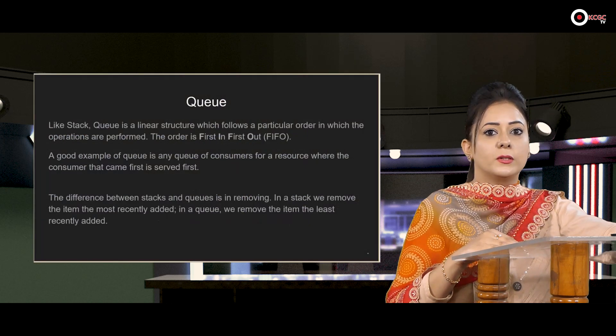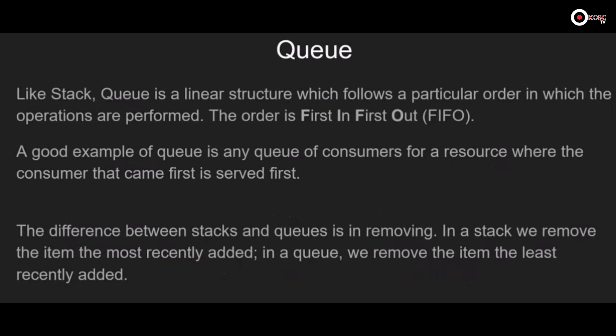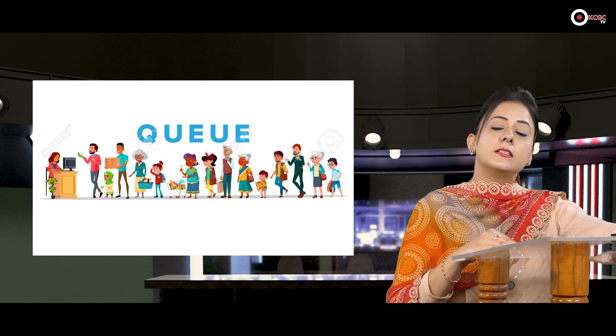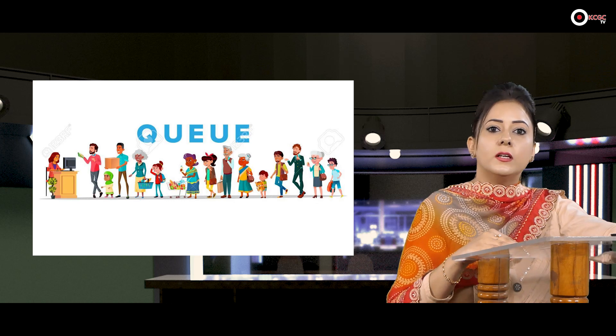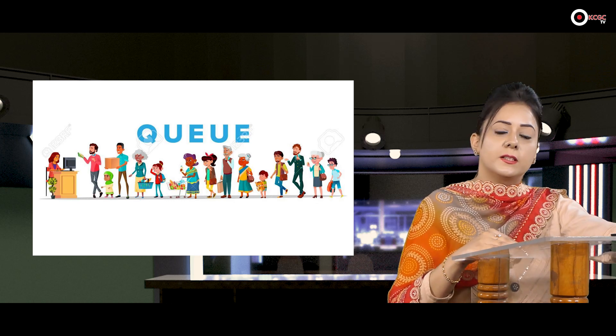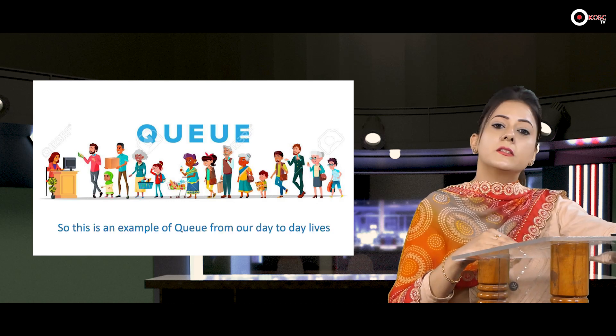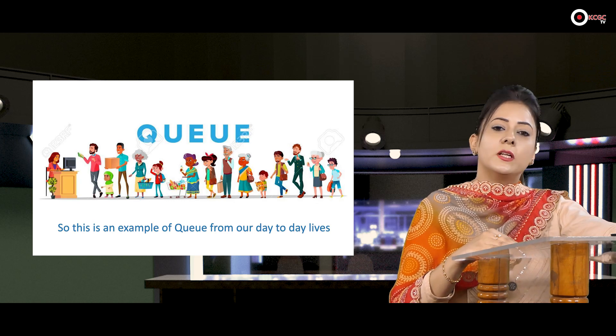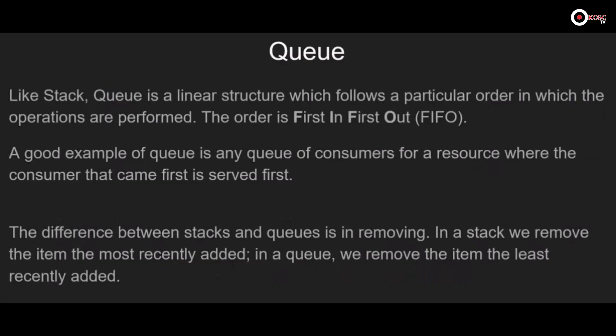After discussing two linear data structures, let us discuss the third: queue. Like stacks, a queue is a linear data structure that follows a particular order — first in, first out (FIFO). Consider a queue of people standing in a shopping mall waiting for billing. The person who entered the queue first is served first and is the first to be removed. The difference between stack and queue is in removing: in a stack we remove the most recently added item, while in a queue we remove the least recently added item.